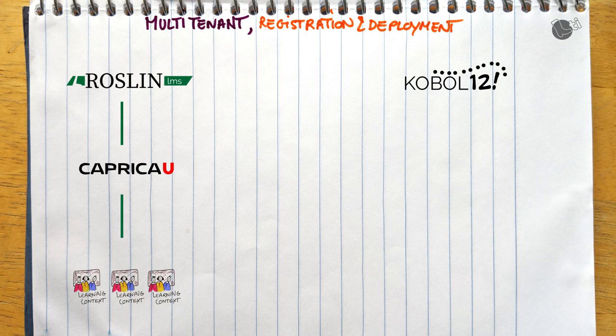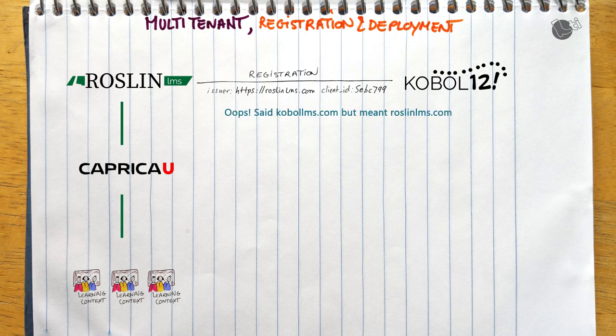To make it easy, Cobalt 12 will register once with RoslynLMS as the learning platform. From Cobalt 12's perspective, that registration is uniquely identified by the issuer — here that would be CobaltLMS.com — and the OAuth 2 client ID that Cobalt LMS created when it registered Cobalt 12. It's important to understand that once the registration is done, nobody is still using the tool. The tool has not been made available to anybody.